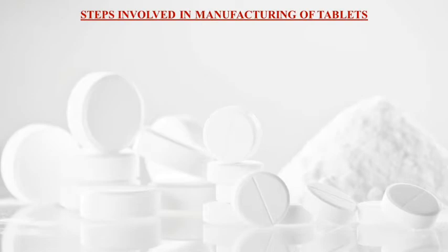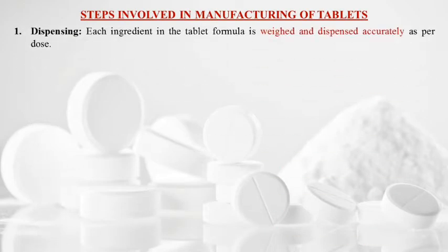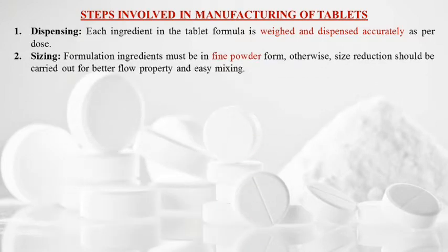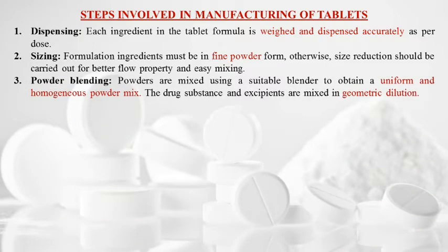Steps involved in manufacturing of tablets: First is dispensing — each ingredient in the tablet formula is weighed and dispensed accurately as per dose. Second is sizing — formulation ingredients must be in fine powder form; otherwise, size reduction should be carried out for better flow property and easy mixing. Third is powder blending — powders are mixed using a suitable blender to obtain a uniform and homogeneous powder mix.